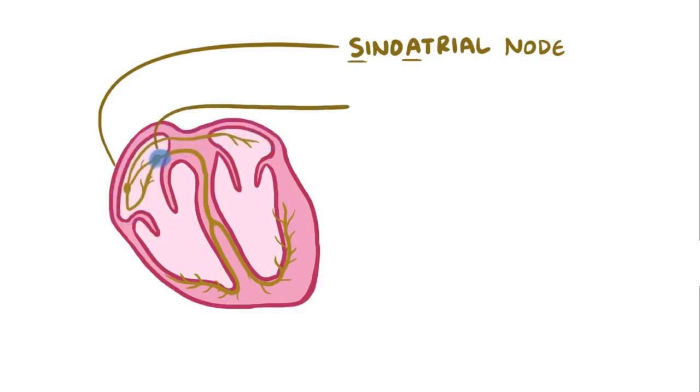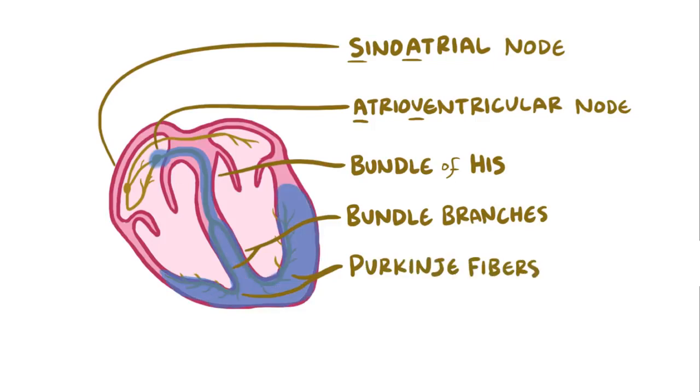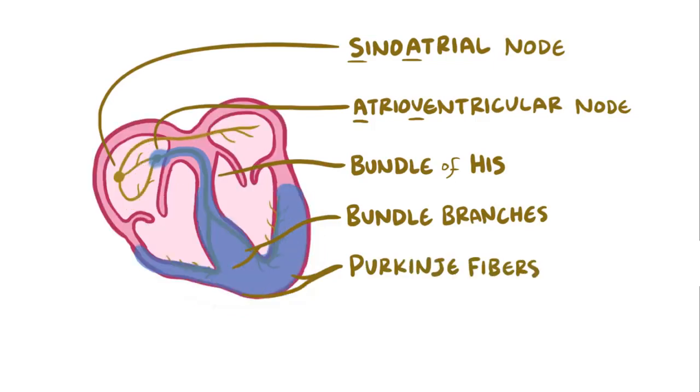And then that signal moves to the atrioventricular or AV node, where the signal is delayed for a split second and then goes down into the ventricles or lower chambers, where it moves down into the bundle of His into the left and right bundle branches, and into each ventricle's Purkinje fibers, causing the ventricles to contract as well.